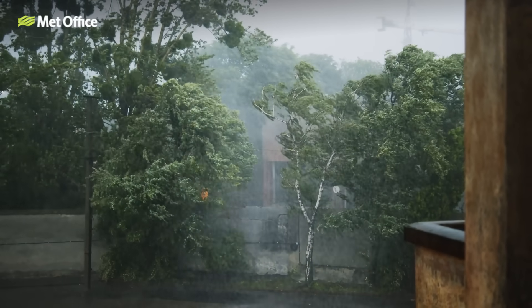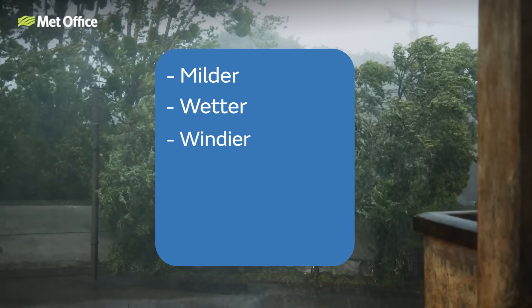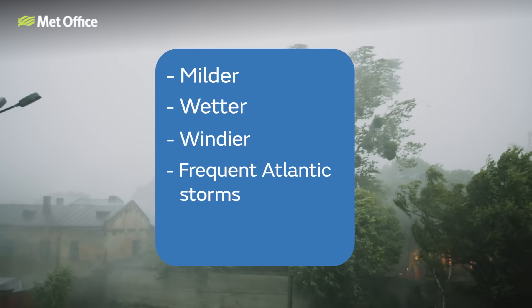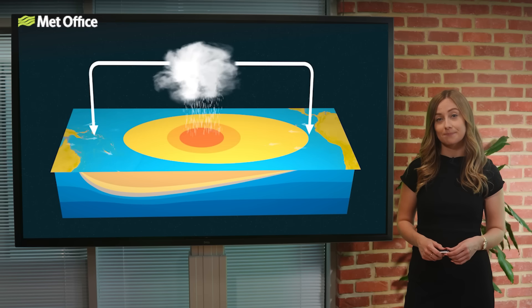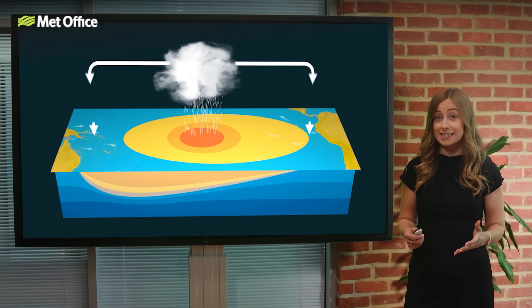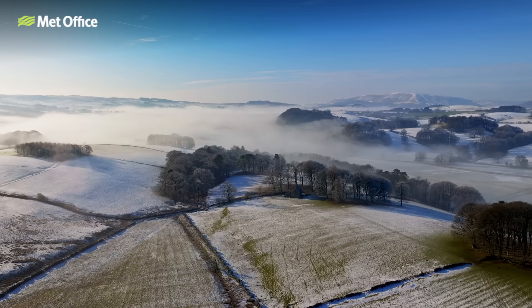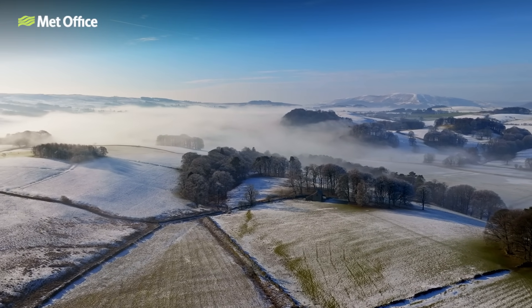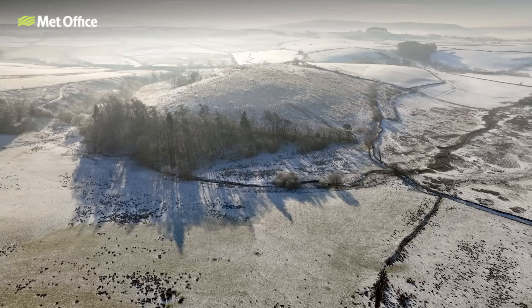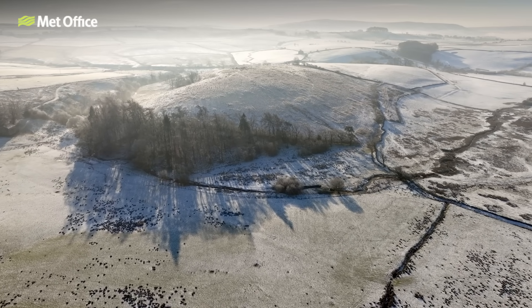As a result, the UK typically sees a milder, wetter and windier start to winter, with more frequent Atlantic storms and above-average temperatures. However, as winter progresses, the jet stream can become more variable. At times, high pressure builds to the north or east, disrupting the westerly flow and allowing Arctic air to reach the UK. This can lead to a colder end to winter, especially if sudden stratospheric warming occurs — but more on that later. So while El Niño tends to increase the risk of a mild, stormy start to winter, the second half can turn colder, particularly if other drivers come into play.